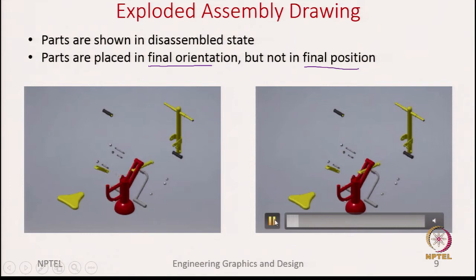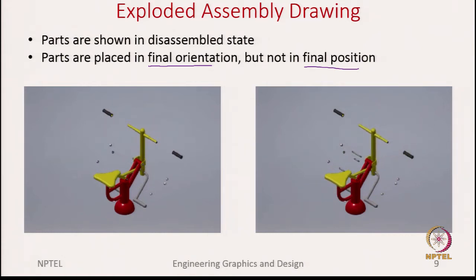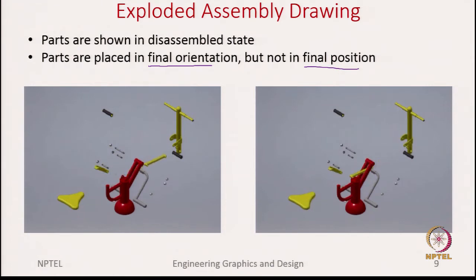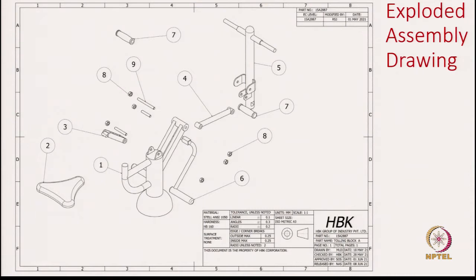There is another way of showing this in the reverse process — showing how each of these components in the exploded view come together to make the final device. This is the information a fabricator needs to know so that after fabricating each individual part, he can make sure he can bring all of them together and the device starts to function. Usually how it is shown in a drawing is only the exploded view, after the parts are moved away from the device, and each and every part is labeled using the ballooning technique.